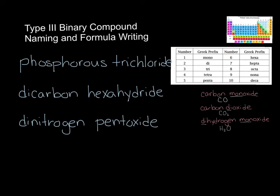Next, phosphorus trichloride. There's no prefix in front of phosphorus, so we have one phosphorus. Tri means three, so it has three chlorines. PCl3 is phosphorus trichloride.